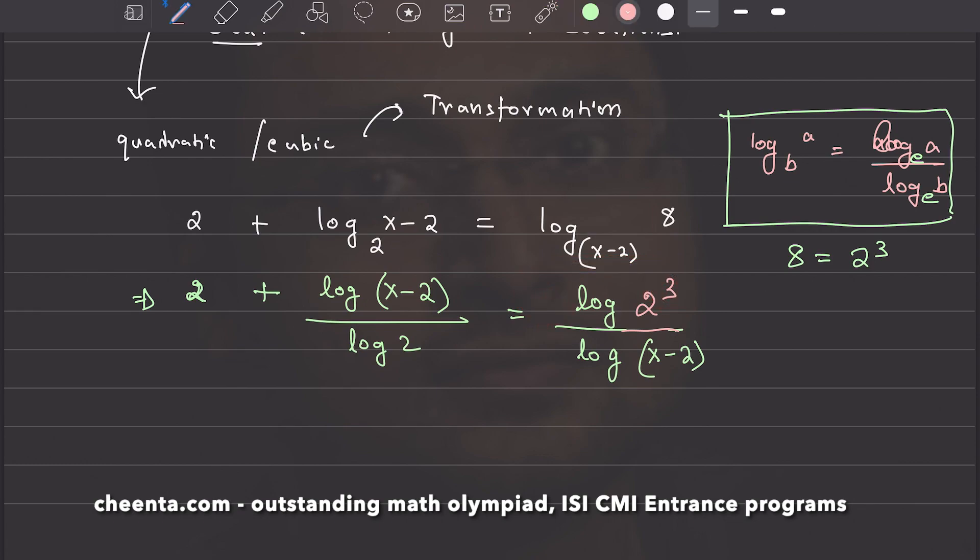You can bring the exponent of the argument to the front. One thing that you can observe here is that this thing right here and this thing right here, these two are reciprocals of each other. So, if one of them is y, then the other one is 1 over y.